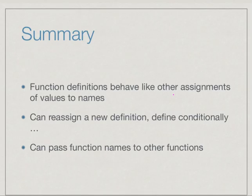To summarize, function definitions behave just like other assignments of values to names. You can reassign a new definition to a function, you can define it conditionally and so on. Crucially, you can use one function and make it point to another function, and this is implicitly used when we pass functions to other functions. In situations like sorting, you can make your sorting more flexible by passing a comparison function which is appropriate to the values being sorted.